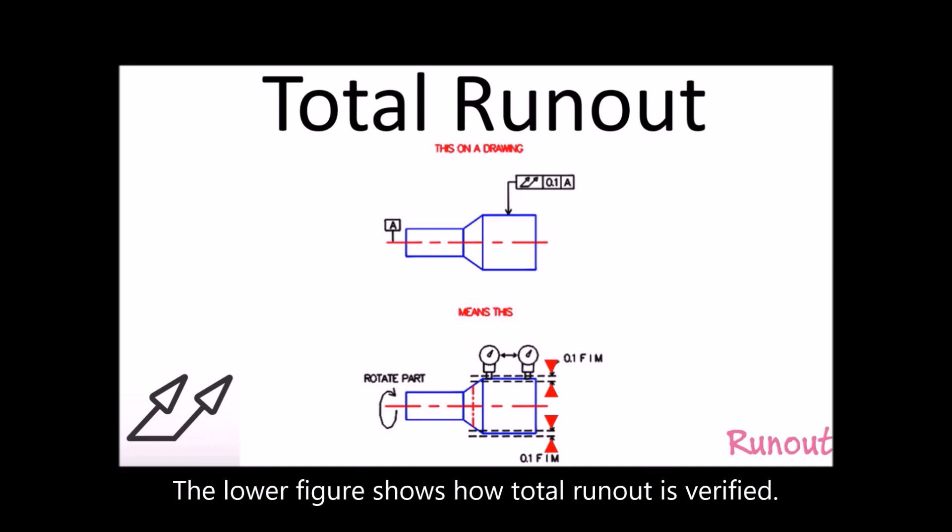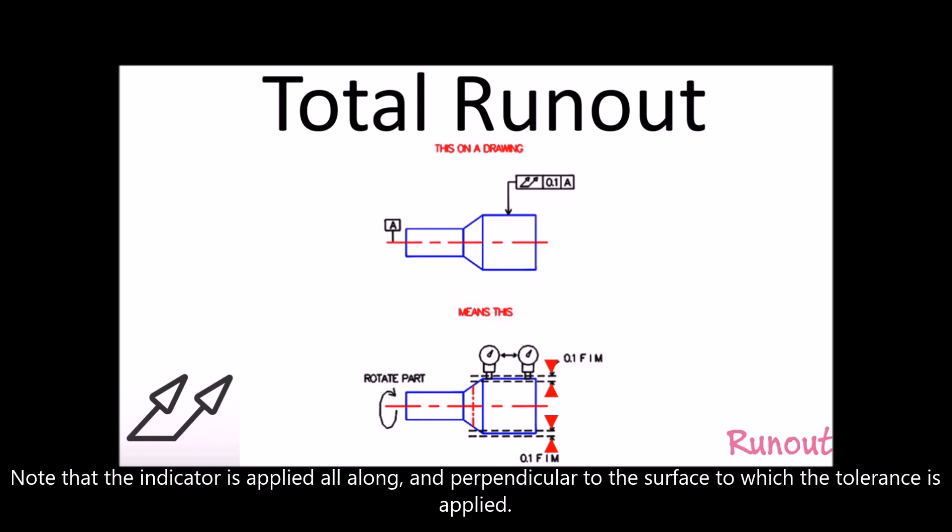The lower figure shows how total runout is verified. Note that the indicator is applied all along and perpendicular to the surface to which the tolerance is applied.